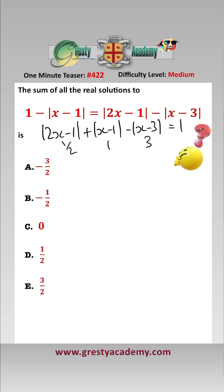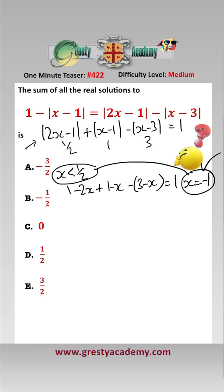This means we have to look at four regions separately. The first region we look at is x less than a half. This equation becomes 1 minus 2x add 1 minus x minus 3 minus x equals 1. Solving that gives us x equals minus 1, and we do have to check that it is in the region, which it is, so that is a legitimate solution.